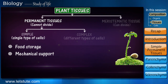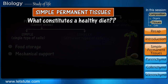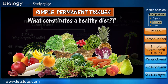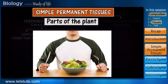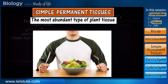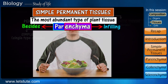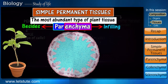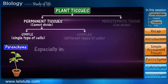Different types of simple permanent tissues help in food storage and providing support to the growing plant. Before we begin with the first type, let's recall what constitutes a healthy diet. A healthy diet must include a variety of vegetables and fruits. These vegetables and fruits are parts of the plant, and when we consume them, we are actually eating the most abundant type of tissue found in plants — it is called parenchyma.